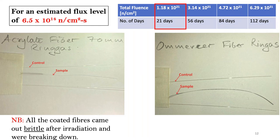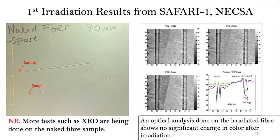Showing the results: we irradiated these fibers for 21 days, up to a total fluence of 1.18 × 10^21 neutrons per centimeter squared. We had three fibers — two were coated, one with acrylate and the other with Omosa coating. These two coated fibers came out brittle after irradiation and were breaking down. The other one, which was a naked fiber with no coat, came out without much of those problems compared to the coated ones.